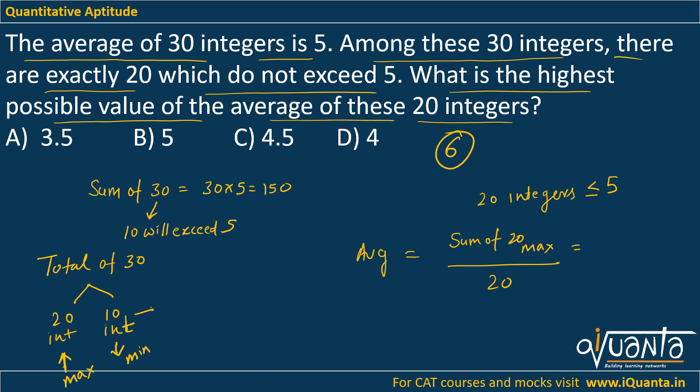So that means these 10 integers which are exceeding 5, all of them will have a value of 6. So what will be the sum of these 10 integers? 10 × 6, that means 60.